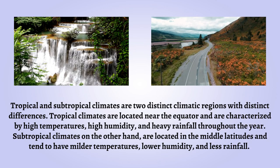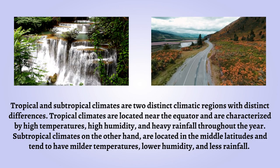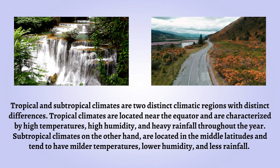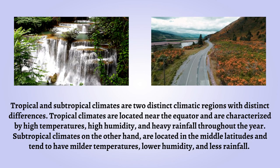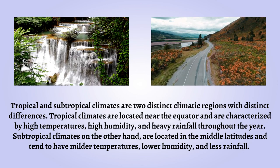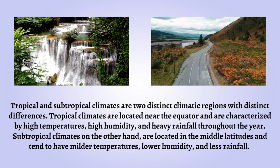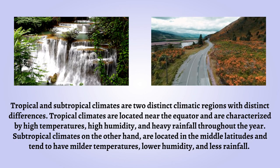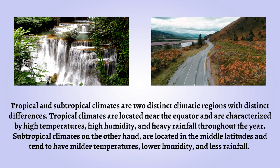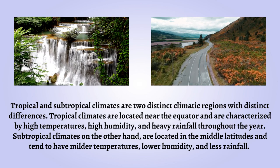Tropical and subtropical climates are two distinct climatic regions with distinct differences. Tropical climates are located near the equator and are characterized by high temperatures, high humidity, and heavy rainfall throughout the year. Subtropical climates, on the other hand, are located in the middle latitudes and tend to have milder temperatures, lower humidity, and less rainfall.